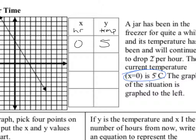Moving forward, after 1 hour, what is the temperature going to be? It's going to be 3. The temperature is dropping 2 degrees each hour, so after 1 hour, starting from 5 degrees, we get 3 degrees.